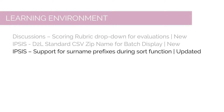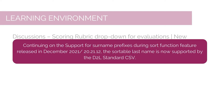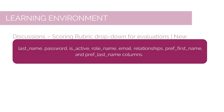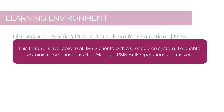Continuing on the Support for Surname Prefixes During Sort Function feature released in December 2021 (20.21.12), the sortable last name is now supported by the D2L Standard CSV. The new version 2.1 CSV now includes the optional Sort Last Name column in addition to the existing Type, Action, Username, Org Defined ID, First Name, Last Name, Password, Is Active, Role Name, Email, Relationships, Preferred First Name, and Preferred Last Name columns. This feature is available to all Ipsys clients with a CSV source system; to enable, administrators must have the Manage Ipsys Bulk Operations permission.